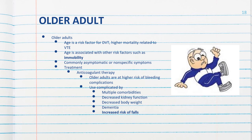DVT is commonly asymptomatic in older adults. When symptoms occur, they are nonspecific. A patient's known comorbidities may share symptoms with DVTs, complicating the diagnosis. Age-related body changes can lead to false positives on D-dimer tests. Anticoagulant therapy is commonly used to treat older adults with DVT, but older adults are at higher risk of bleeding complications and falls. Multiple comorbidities, decreased kidney function, decreased body weight, and dementia all complicate the use of anticoagulant therapy in this population.